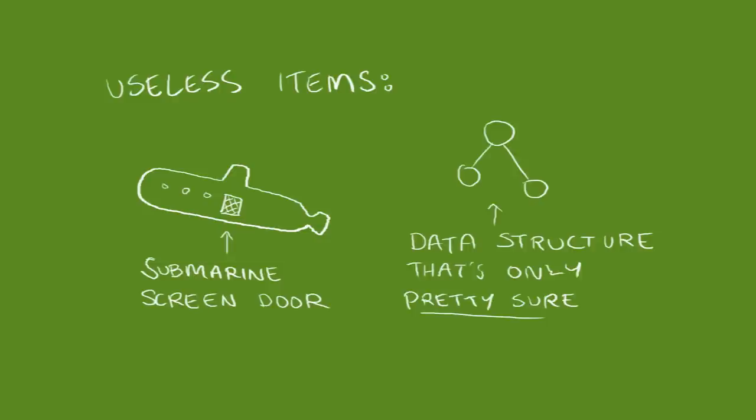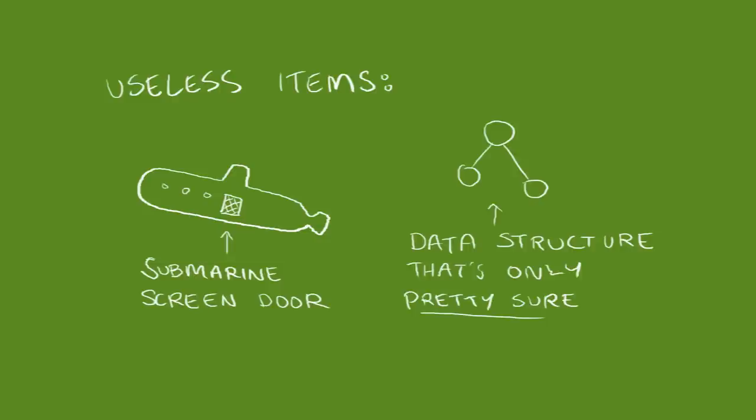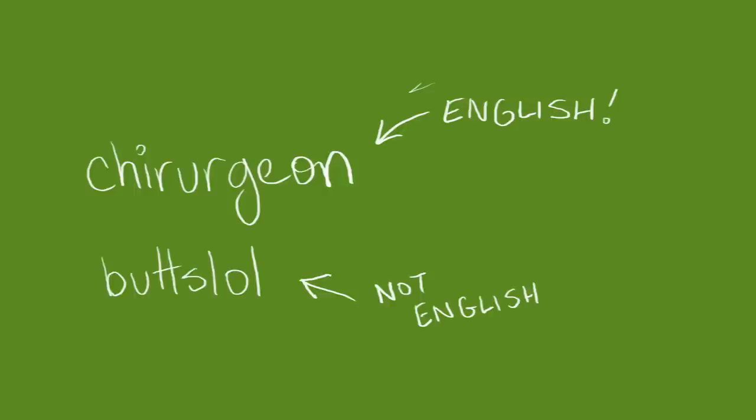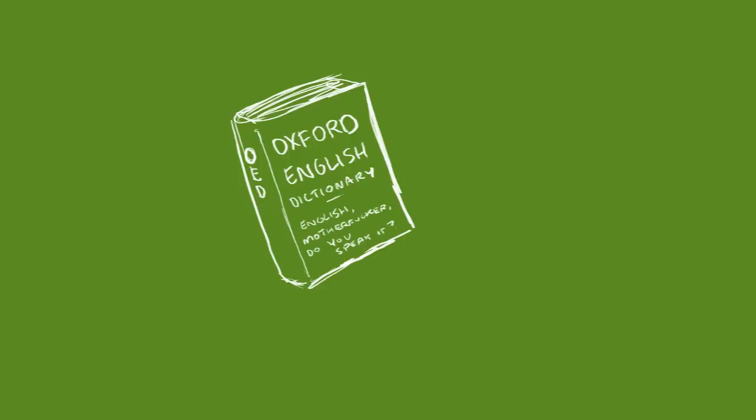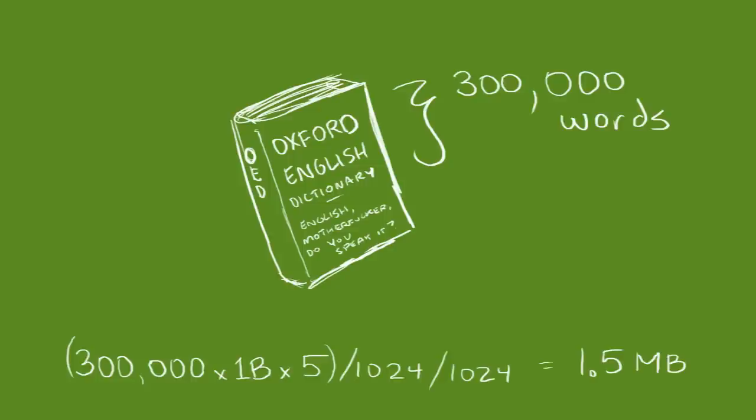Let's construct an example. Let's imagine we need to be able to check if something is or is not an English word against the entire Oxford English Dictionary, all 300,000 words of it. At one byte per character and an average of five letters per English word, that gives us about 1.5 megabytes of data to poke through.